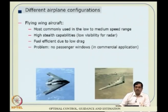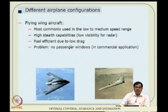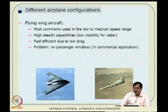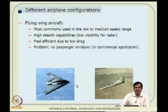There are other designs such as the flying wing aircraft, where the entire thing can be visualized as a single wing. These come from stealth considerations — high stealth capabilities mean low radar visibility. They are fuel efficient due to low drag and typically fly at very high altitude where air density is low, dynamic pressure is low, and drag is low. However, this configuration is not very popular for commercial aircraft because there is no window arrangement — people do not like to sit without looking outside.